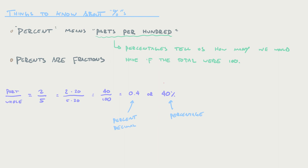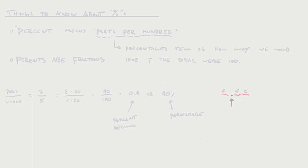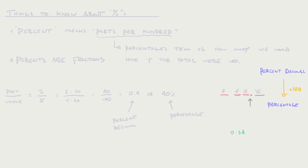You've got your percent decimal and your percentage — the commonality is that they're the same number, all you've done is move the decimal point. If you want to convert a percent decimal into a percentage, you just move the decimal place twice to the right. Moving the decimal place one time is multiplying by 10, so moving it twice is multiplying by 100. For example, 0.34 as a percent decimal becomes 34%. To go backwards, you just move the decimal point left twice, which is a division by 100. So if you want to turn 64.7% into a percent decimal, that would be 0.647.